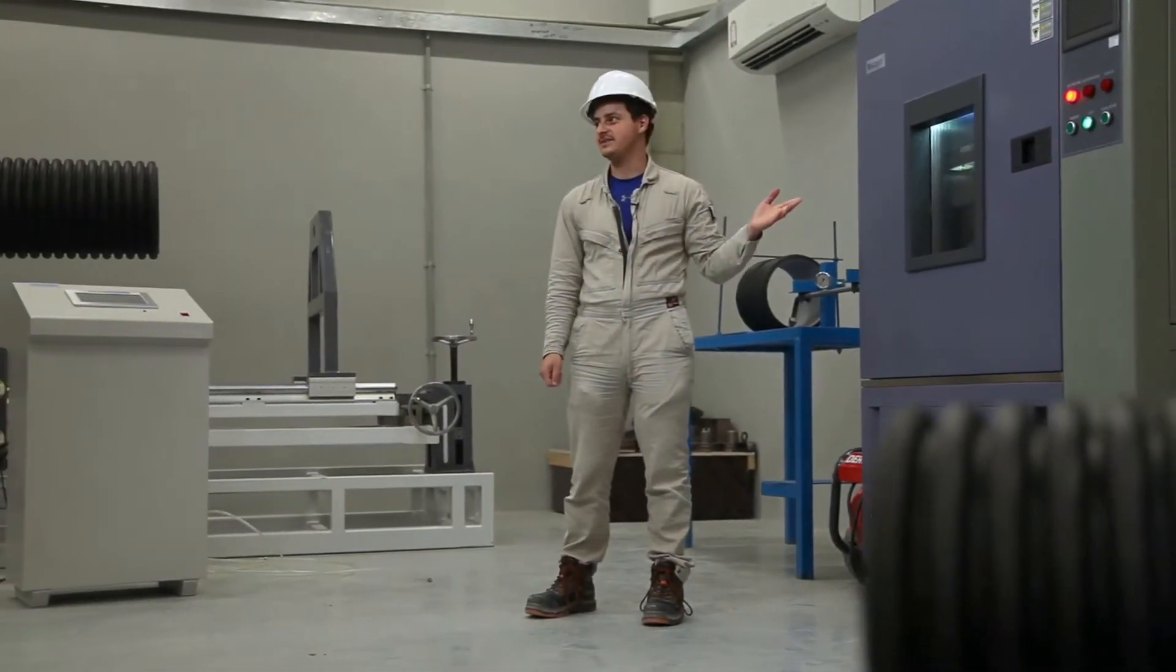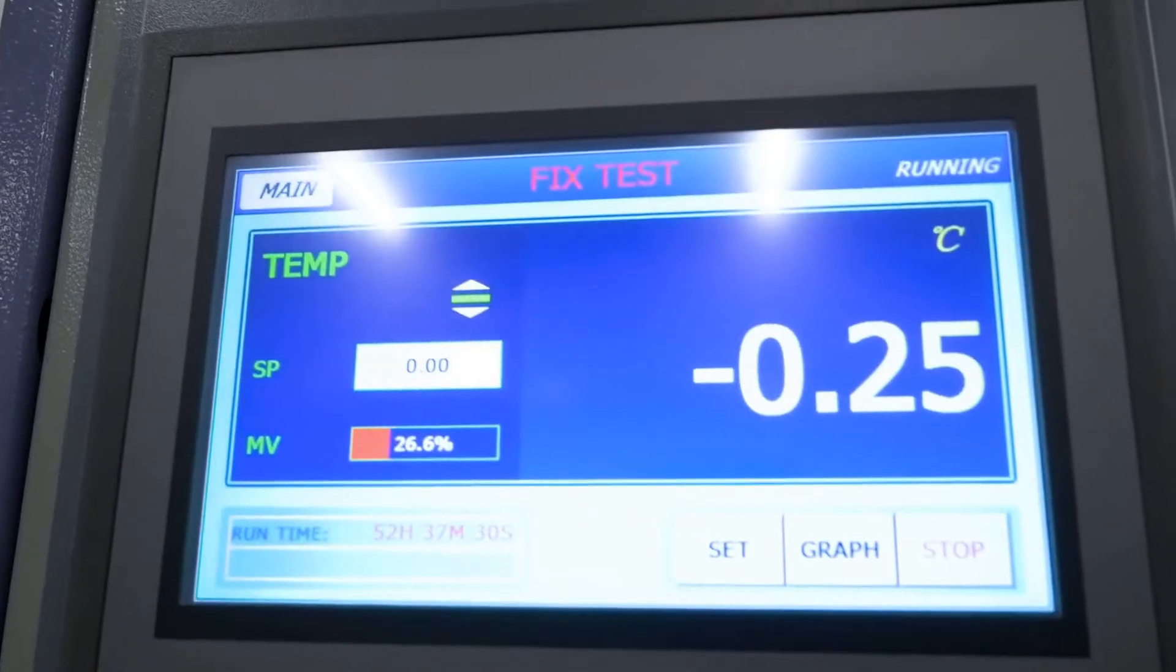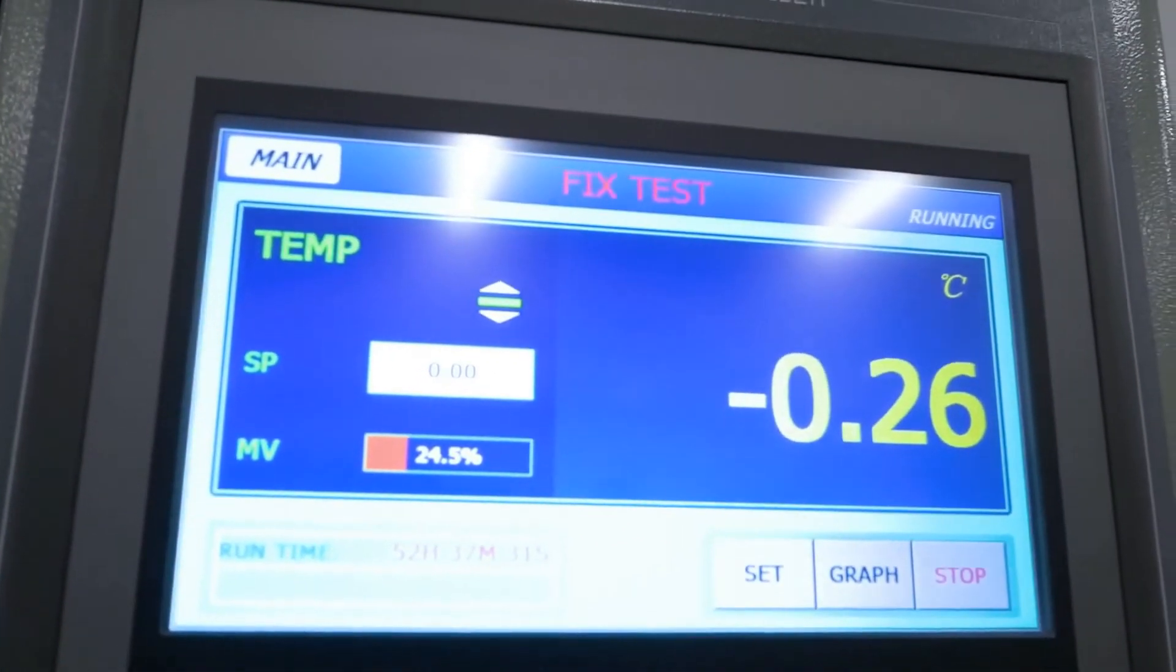This machine is a freezer. The purpose of this equipment is to freeze the pipe to zero degrees Celsius so that we can use it for the impact test, which I will now show you.